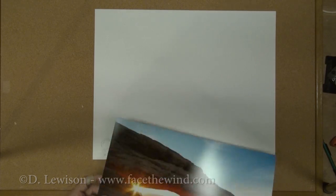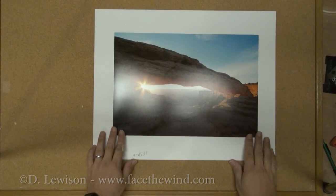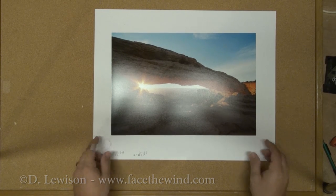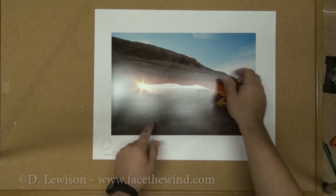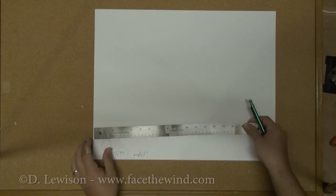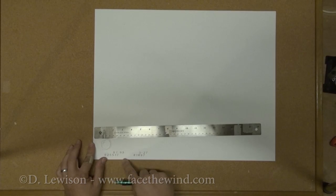Now this is a 16 by 20 inch mat and I'm using an 11 by 16 photograph. So in order to measure that out, I'll just go ahead and make my lines about a quarter inch in on either side. Now I'm making all my measurements from the left edge and from the bottom edge.